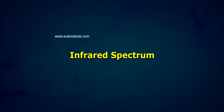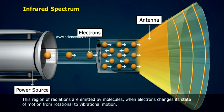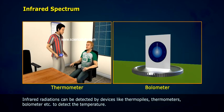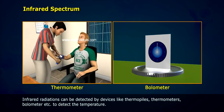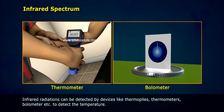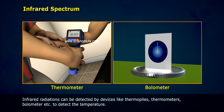Infrared spectrum. This region of radiation is emitted by molecules when electrons change their state of motion from rotational to vibrational motion. Infrared radiations can be detected by devices like thermopiles, thermometers, bolometer, etc. to detect the temperature.